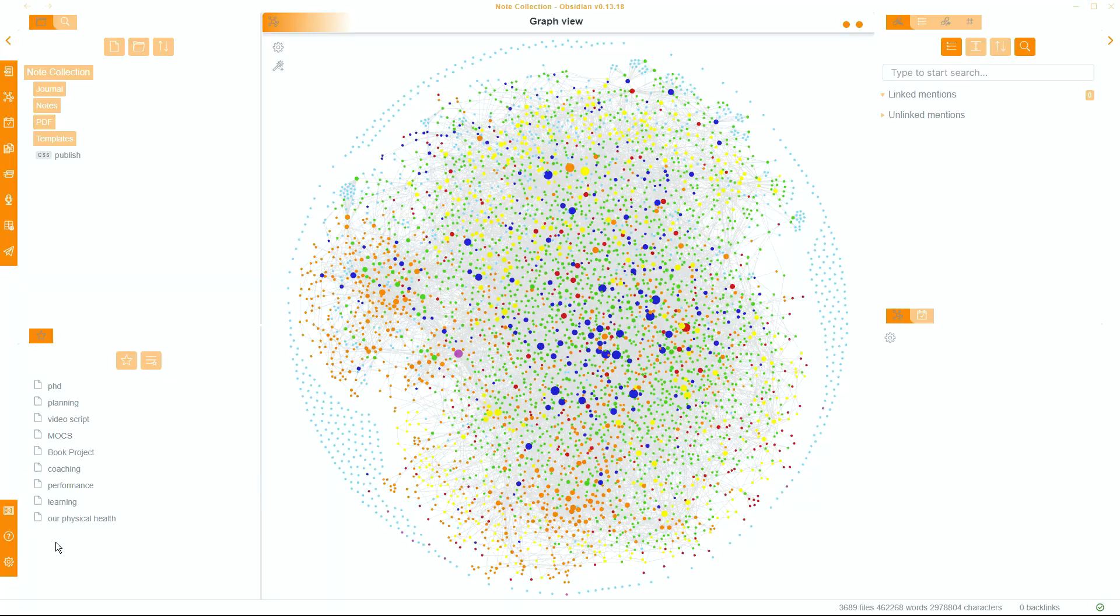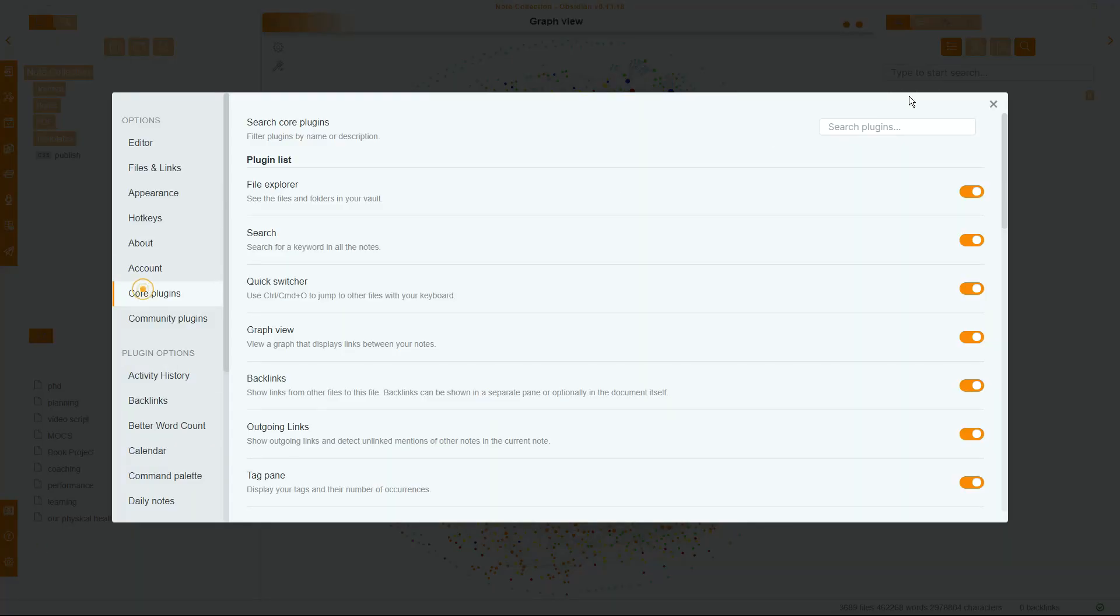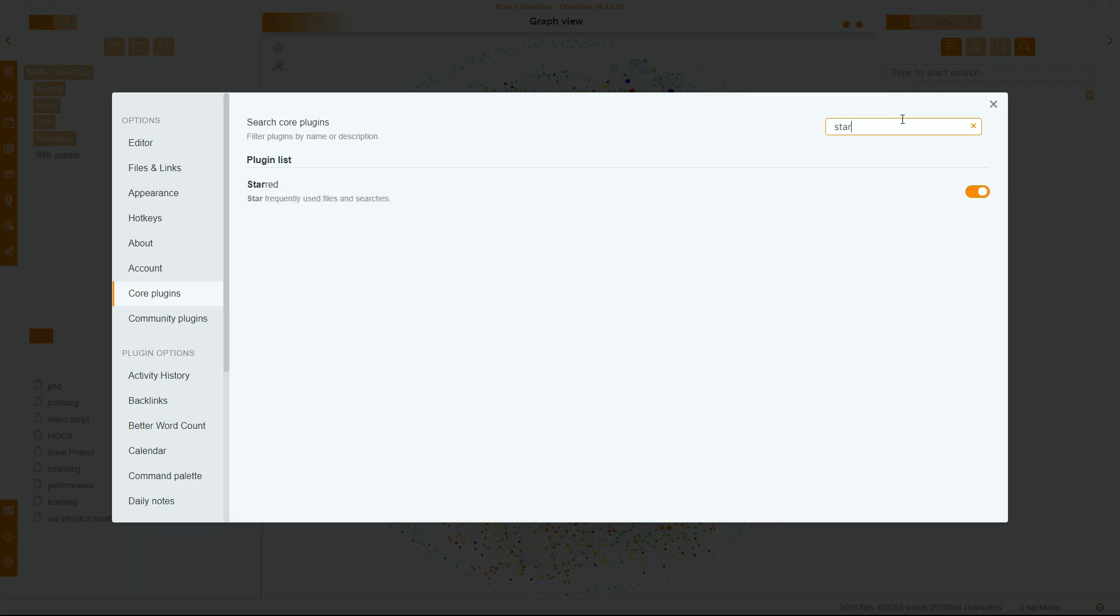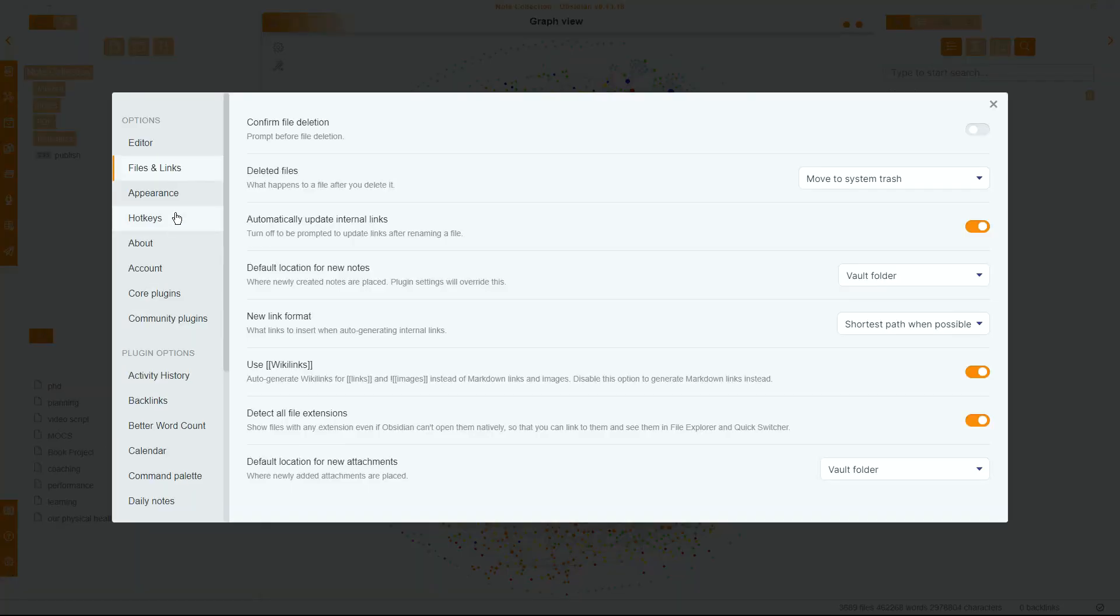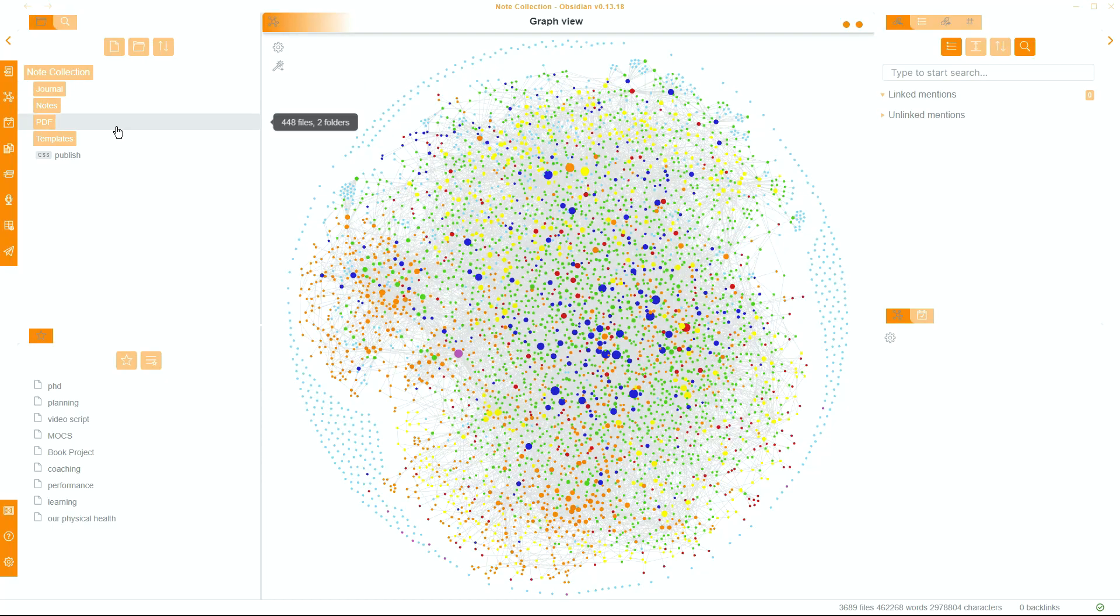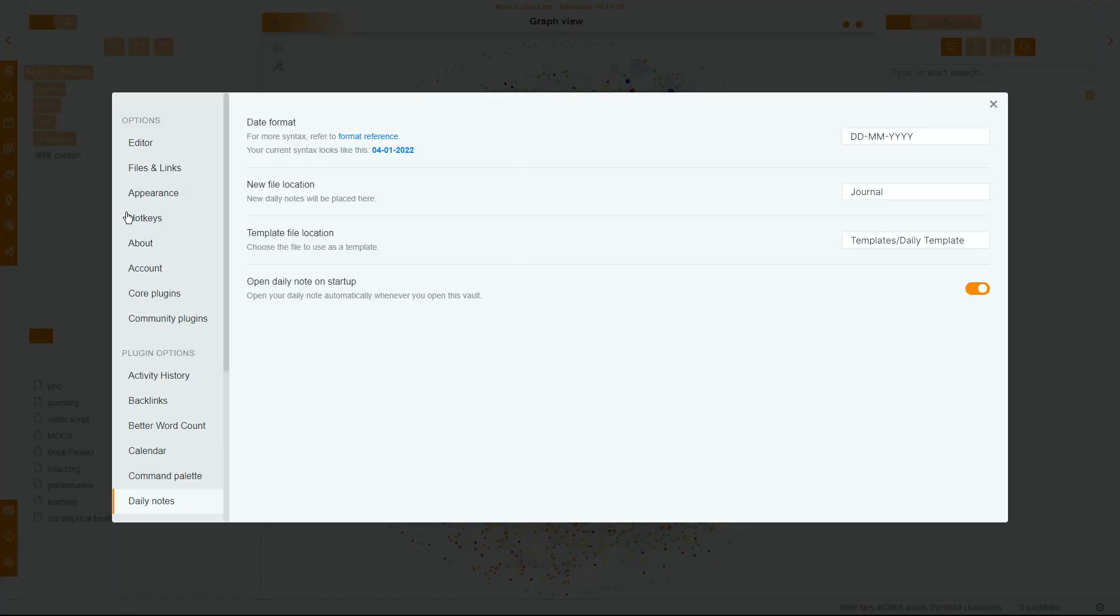I would probably start with the things that almost everyone has, so that's enabling the Daily Notes plugin, the Templates plugin, and the Starred plugin. If all of the attachments, like the images and the PDF files, are all going to go into the same folder, go into the settings and actually change that to a default setting once you've made the folder. Then make a Journal folder for all of the Daily Notes, so they're somewhat organized. A Template folder for the templates. A Notes folder for all of the other notes, you can sort out your categorization afterwards. Then you may want to configure some of those core plugins, so you can go to the Daily Notes plugin, and make sure that all of the new days go into the Journal folder.